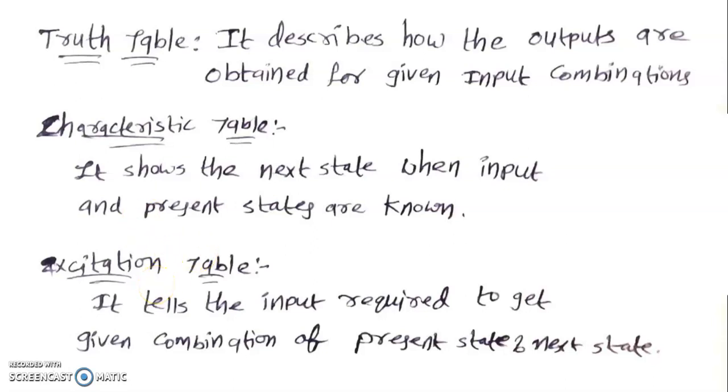Coming to the excitation table, it tells the input required to get the given combination of present state and next state. Suppose the circuit is in present state, let us consider Q output is equal to 0.